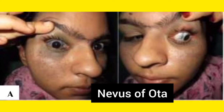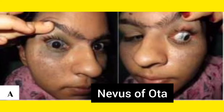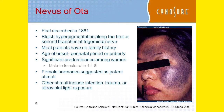Sometimes Nevus of Ota can also involve the eye itself. In picture A (left side), hyperpigmentation has occurred inside the eye as well. Generally it occurs around the eye, just like an 'O.' Always differentiate Ito and Ota: Ito occurs on the shoulder, Ota occurs around the eye — they are always asked in examinations.